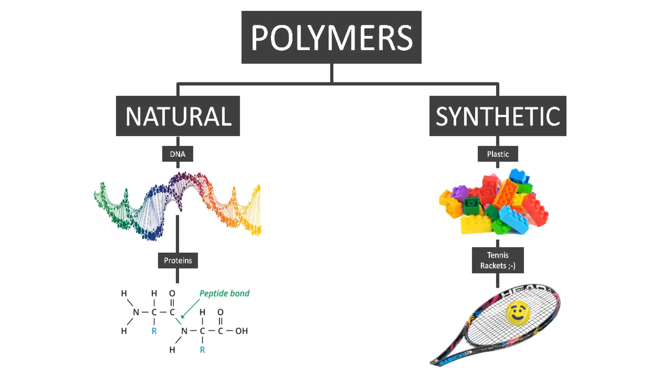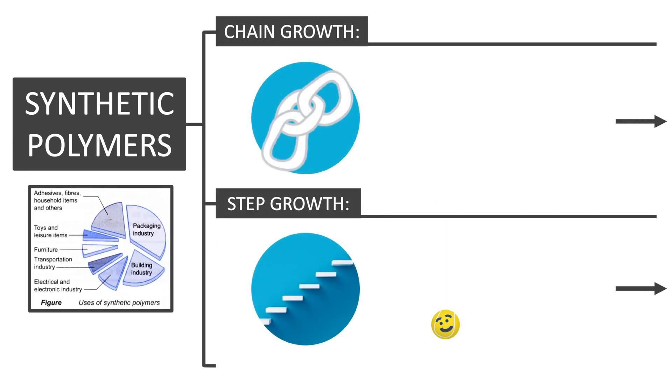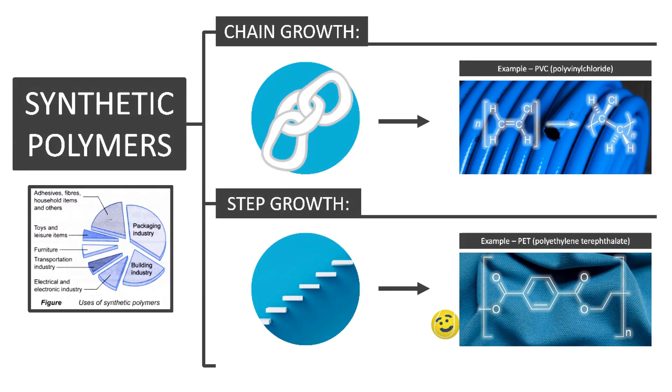And synthetic polymers, man-made polymers, for example those found in plastics and tennis rackets. The majority of synthetic polymers can be formed by two main methods: chain-growth polymerization and step-growth polymerization.